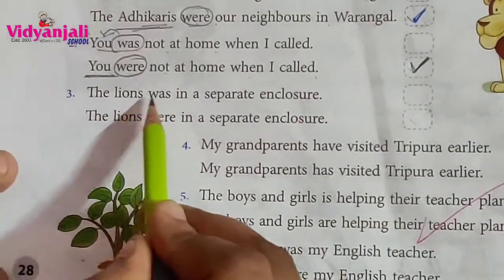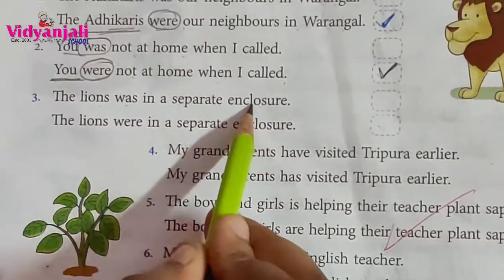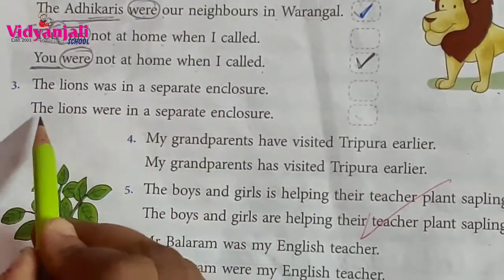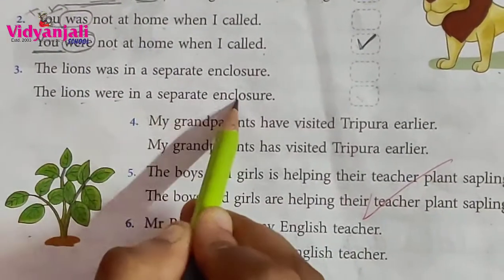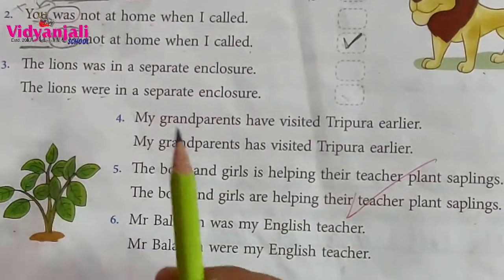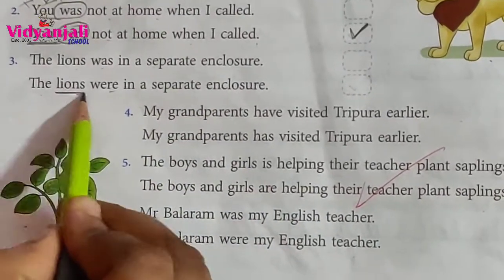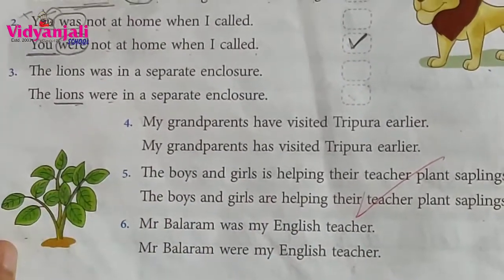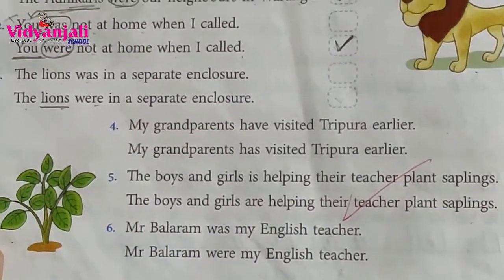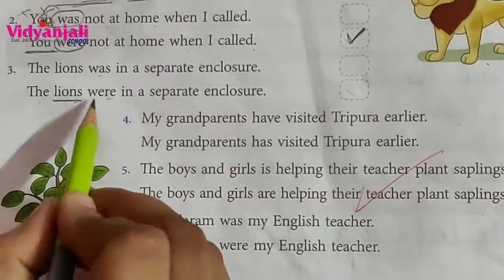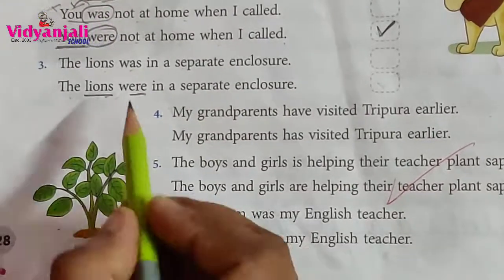'The lions was in a separate enclosure' or 'The lions were in a separate enclosure.' Tell me the answer — 'lions' is plural or singular? Plural. So which verb will it take?